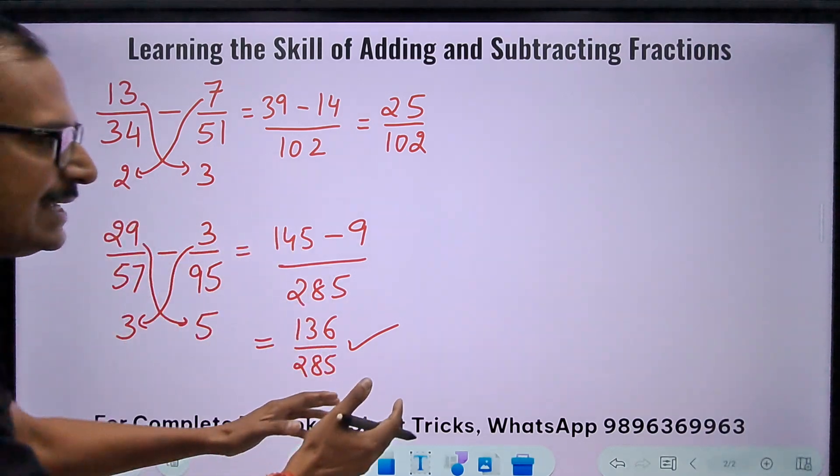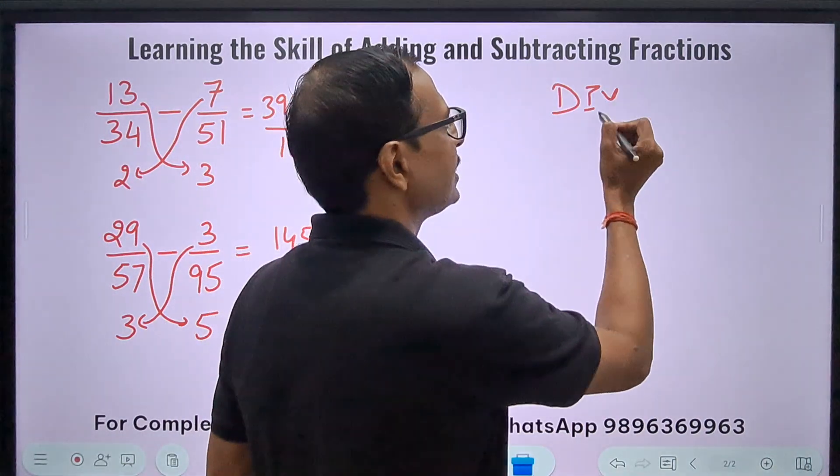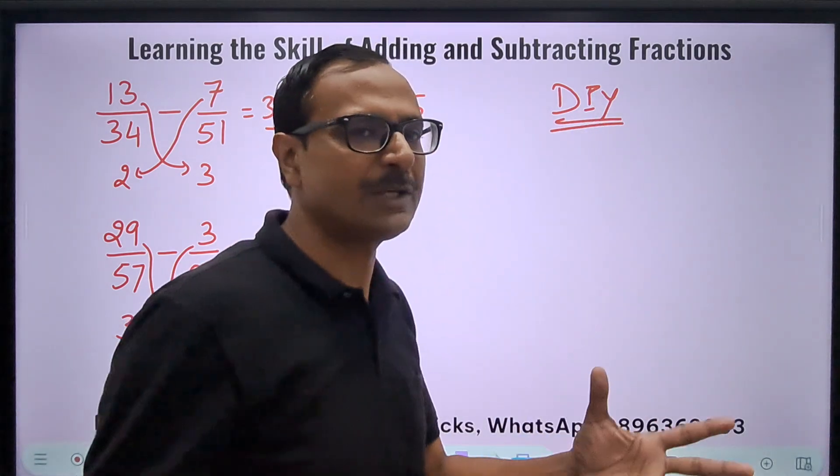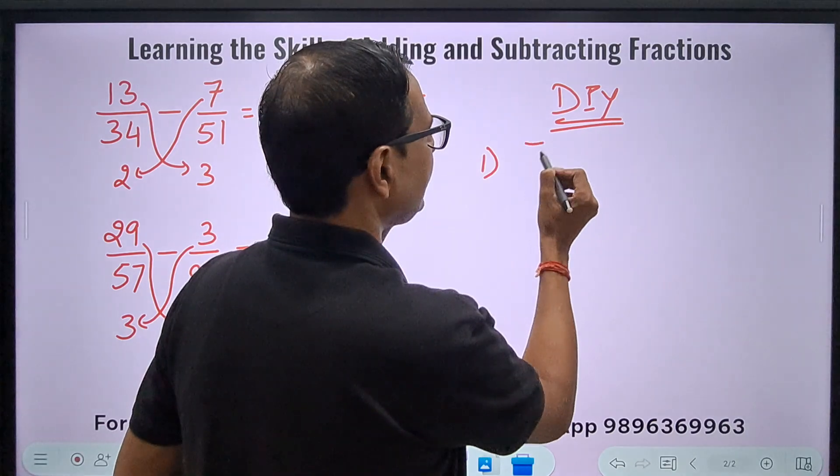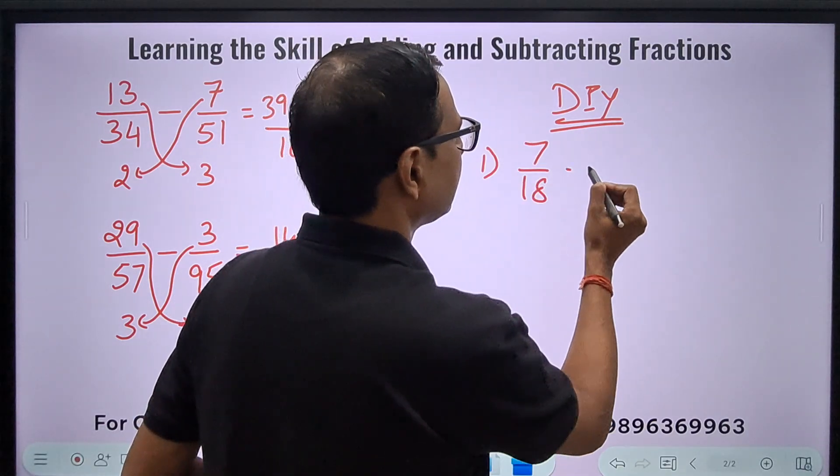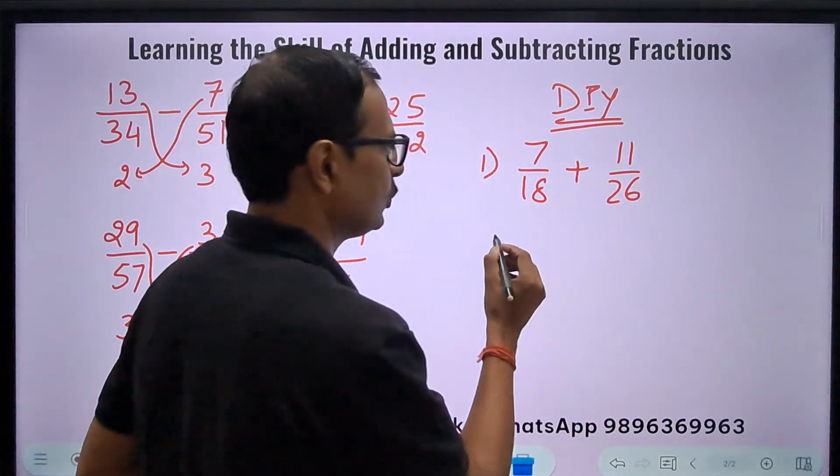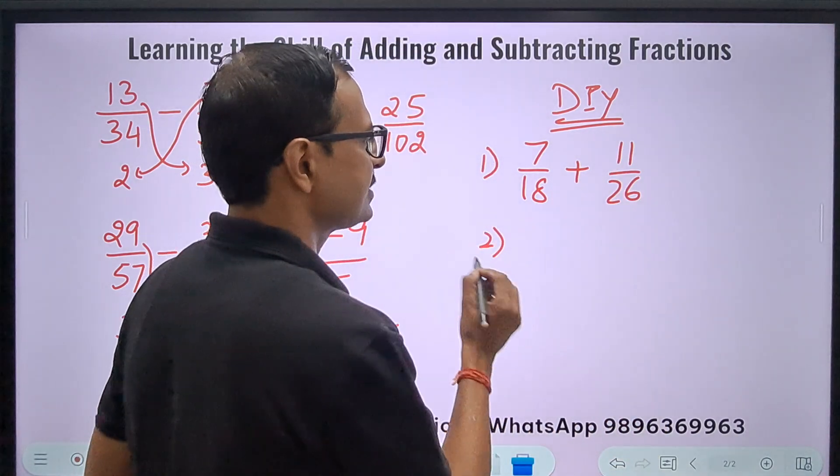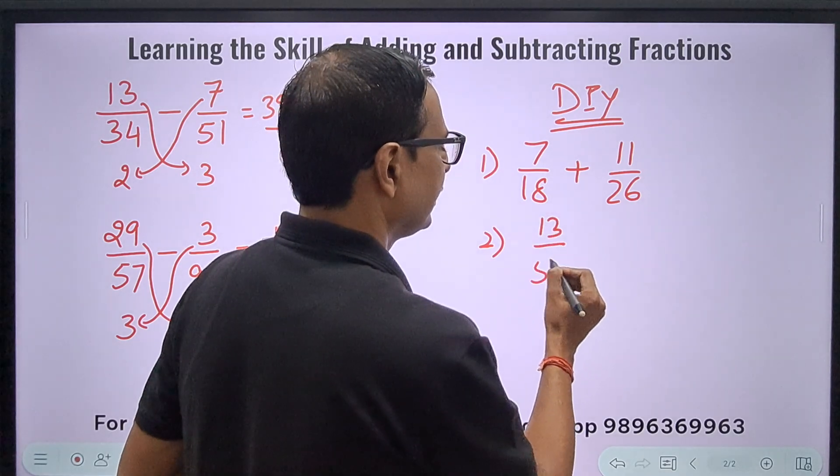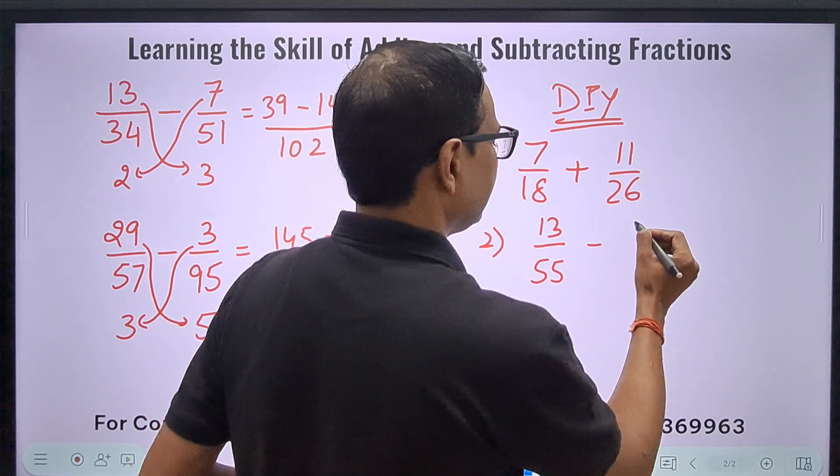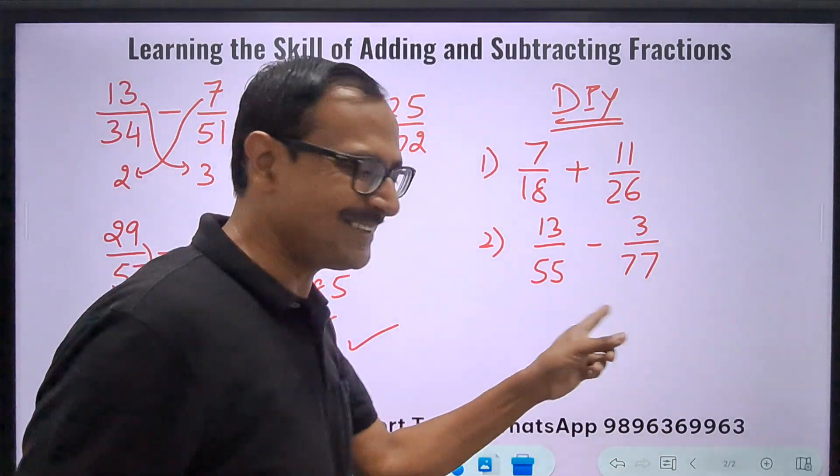So I'll give you some DIY advice. You need to answer in the chat whether you could do it through this method or not and how much time you took. The first question is: let's do 7/18 plus 11/26. You will do this. The second one is: let's do 13/55 and subtract 3/77 from that. Easy one. See, 55, 77, very easy. I hope you are getting the correct thing in the mind.